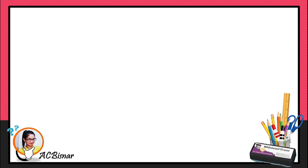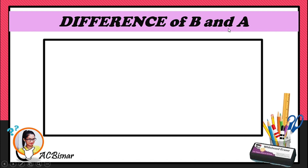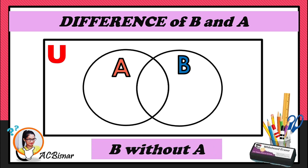For the difference B minus A, draw the rectangle for the universal set and the two circles for A and B. Remember that these are the elements in B without the elements in A. The shaded region covering only set B will be your answer. That's it — I hope you learned. Thank you!